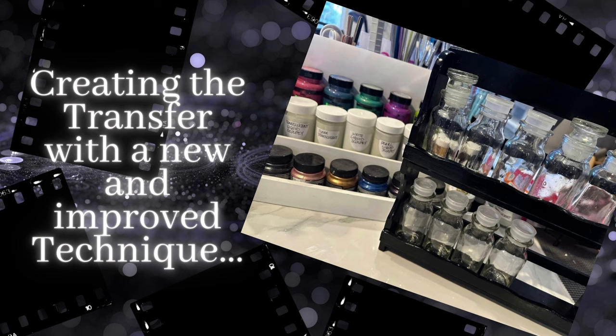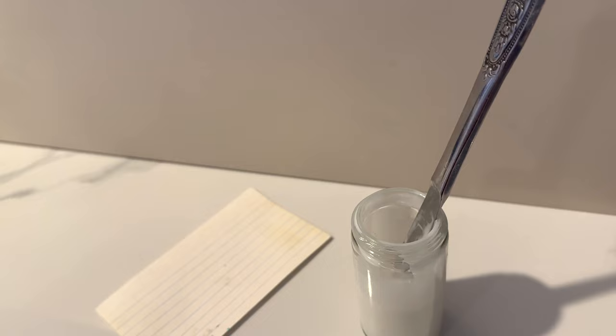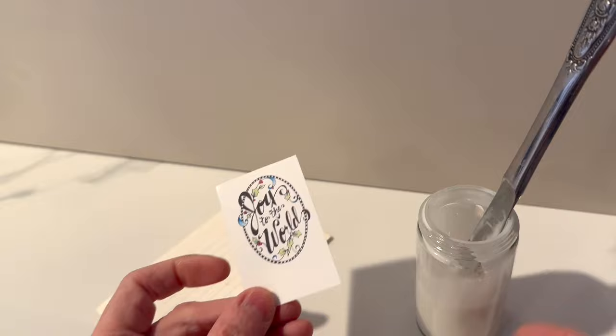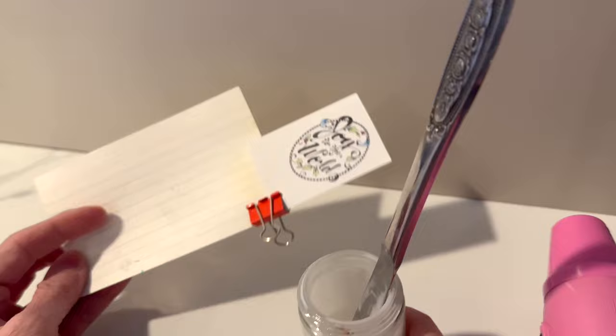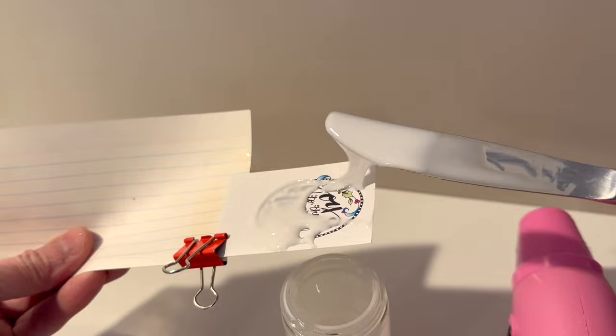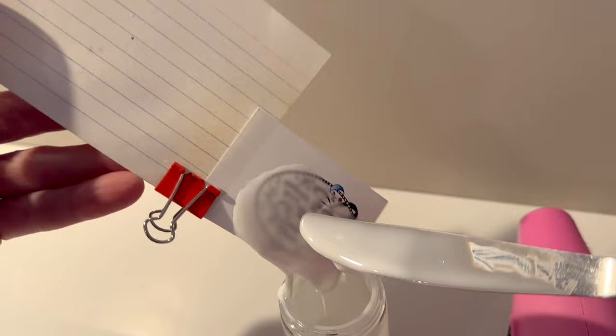Okay, now that we got our liquid Sculpey all in a nice runny form, and that's what you're looking for, I'm bringing in an index card. And then this is an image I printed out on that semi-gloss laser paper. So you want that glossy paper to go ahead and create your image on, which is great. I cut it down, I'm bringing my embossing gun, and then I clipped that piece to the index card.